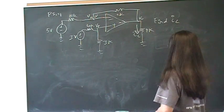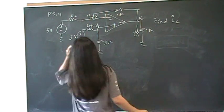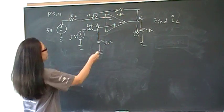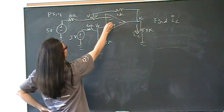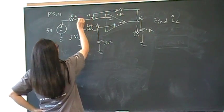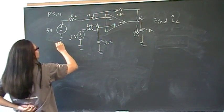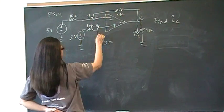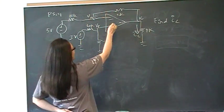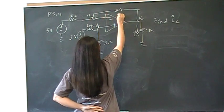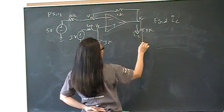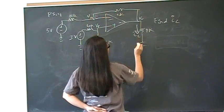Hi, you guys. This is problem number four from chapter five on op amps. We have an op amp where the negative terminal is connected to 10k and then to 5 volts. The positive terminal is connected to 3k and 6k here to 3 volts. We have a 5k feedback resistor and 4k, and we need to find IL.